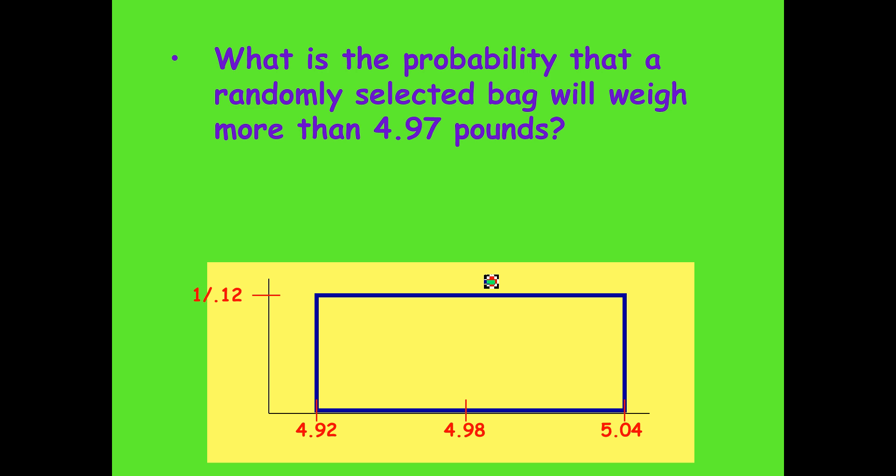Now, let's say you're given a common question. What is the probability? Let's say this distribution represented the distribution of the weights of bags. And let's say you want to know the probability that a bag will be greater than 4.97 pounds. Well, all we need to do is find the area under the curve from 4.97 or greater, because it's more than 4.97 pounds. So we need to figure out where 4.97 is, right there.